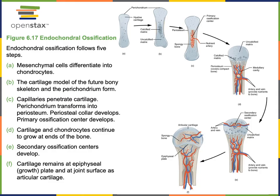In contrast to intramembranous ossification, endochondral ossification forms bone from a cartilage model. The model of bone first formed during fetal development is a blueprint of the bone's basic shape produced out of hyaline cartilage tissue.